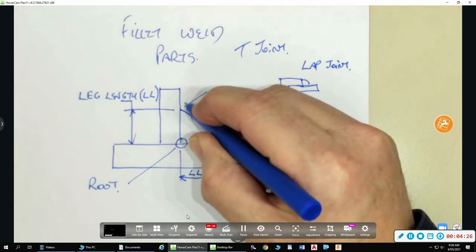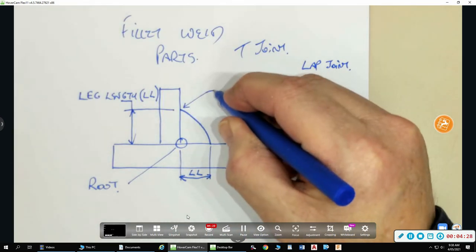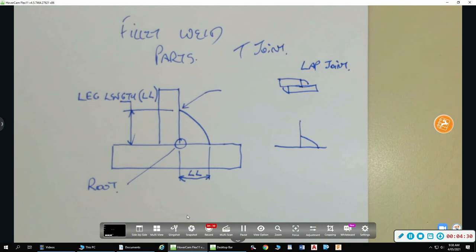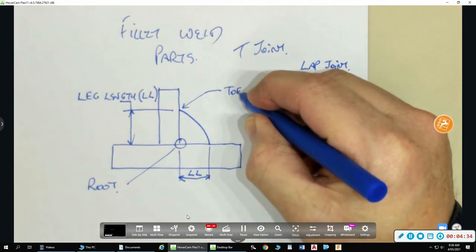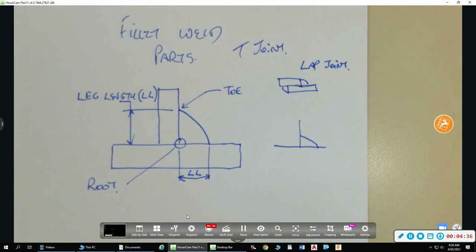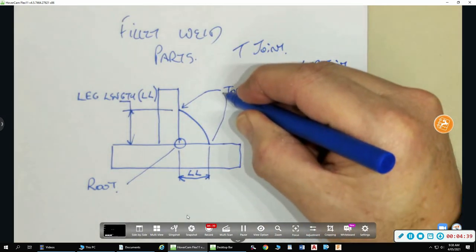Then we have this here. What do we call that? Toe. Toe. Is there another toe? Yep. That one as well.